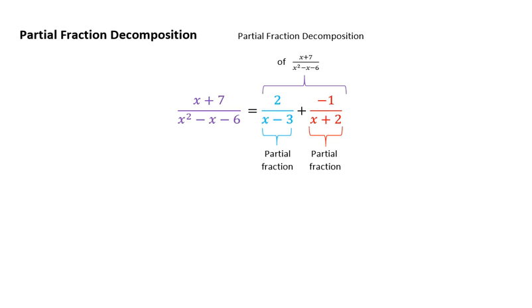here we have x plus 7 divided by x squared minus x minus 6. Well, this can be rewritten as 2 divided by x minus 3 plus negative 1 divided by x plus 2.